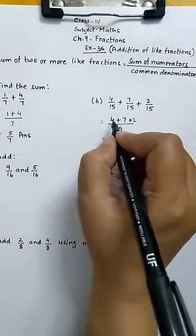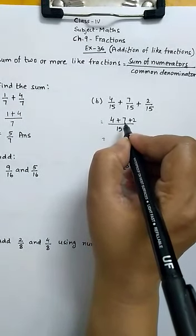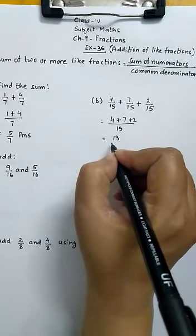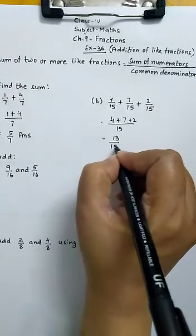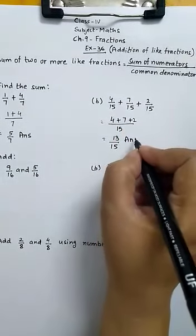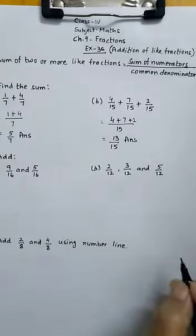Let us add 4 plus 7 is 11 plus 2, 13. So sum is 13 upon the common denominator 15. So sum of these three fractions is 13 by 15. So this will be the answer.